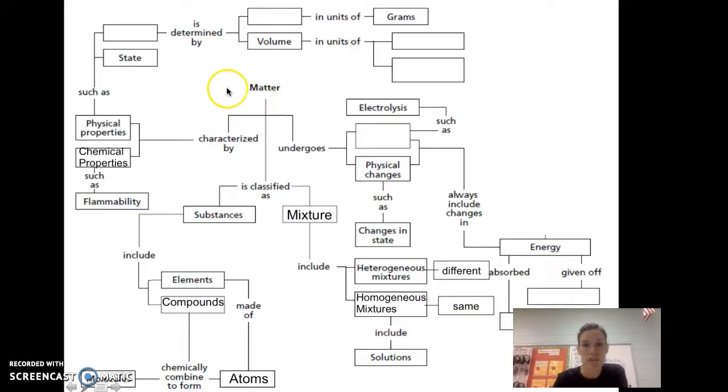Moving back from matter but going to the left here, matter is characterized by physical and chemical properties. An example of a chemical property is flammability. Physical properties, some examples are density and state. What I mean by state is states of matter - solid, liquid, or gas. Density is determined by mass and volume. You actually divide here: mass divided by volume. Mass is going to be in grams, and volume is either in milliliters or cubic centimeters. Those are equivalent to each other; we just write them differently depending on if it's a solid or a liquid typically.